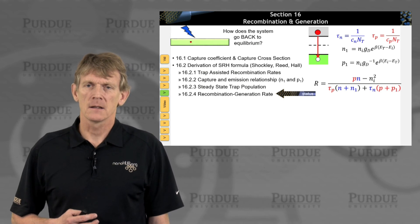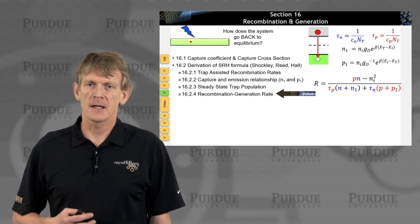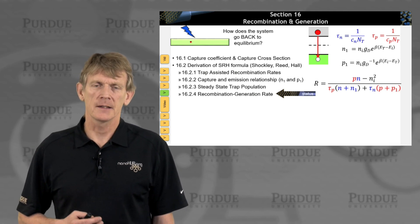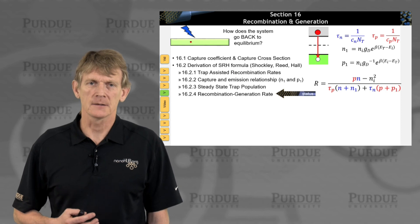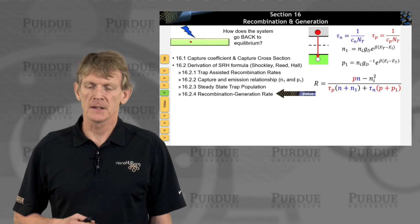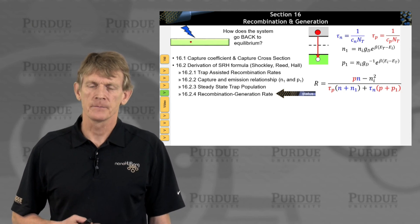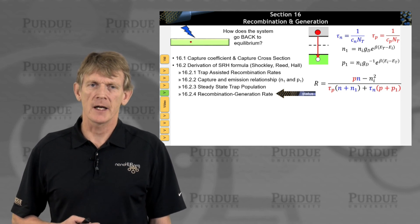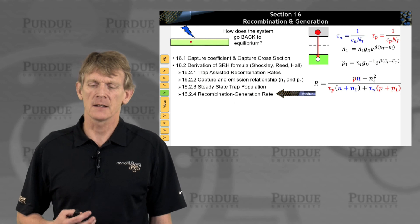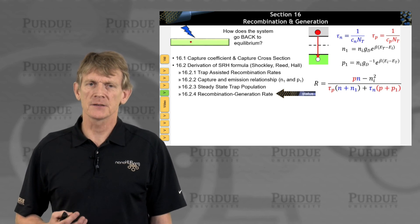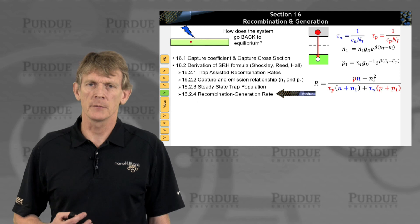Now, you see that there's a Pn minus Ni squared. If you have a high doping, a reasonable N doping, that means N is large and P is reciprocally smaller. But now you say you inject more electrons. So N times P becomes larger than Ni squared due to some non-equilibrium process. Then you have some larger number minus a smaller number. You have a positive number. You have recombination.